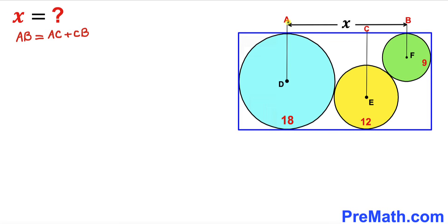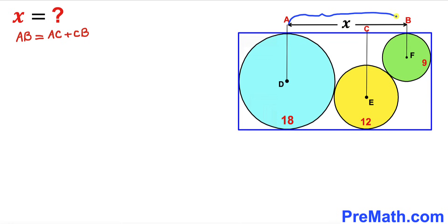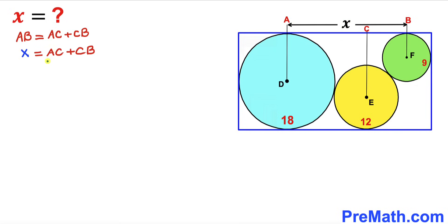Let's make an observation: the distance between points A and B is equal to length AC plus length CB, as shown in this equation. The distance between point A and point B is represented by x, so I'm going to replace AB by x. Our task is now to find the length AC and the length CB.